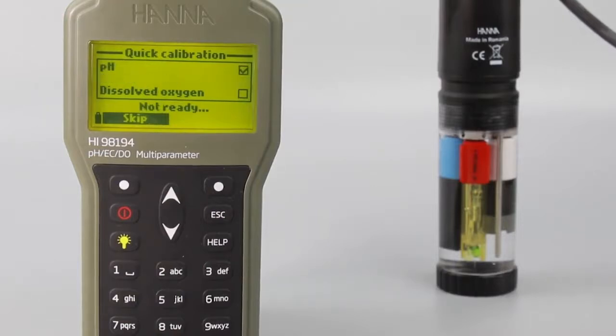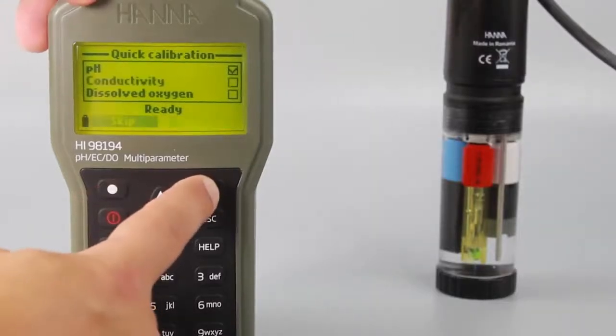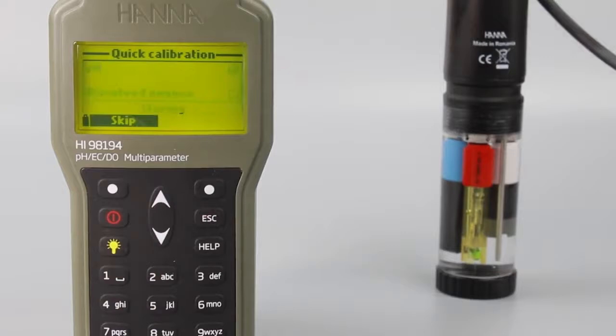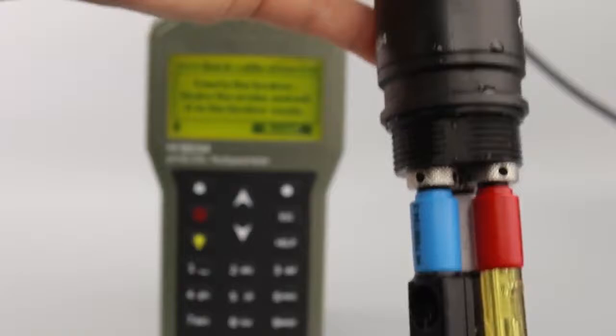Once you get to the dissolved oxygen calibration, you'll be prompted to empty the beaker. Unscrew the calibration beaker and empty the solution.